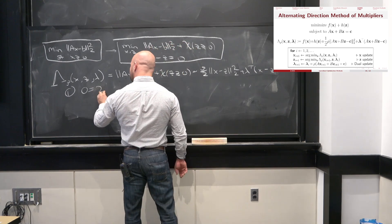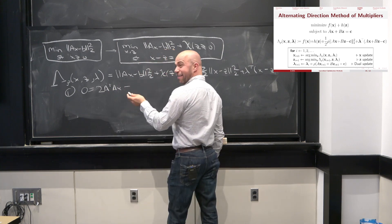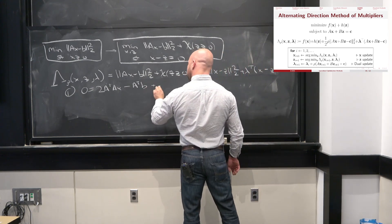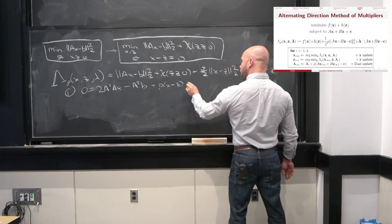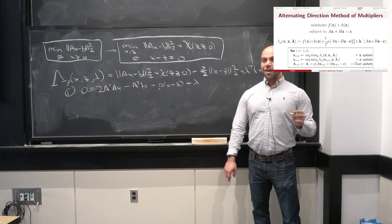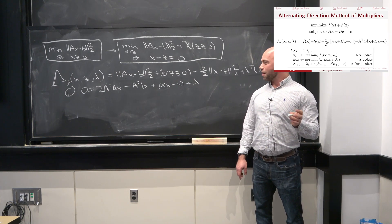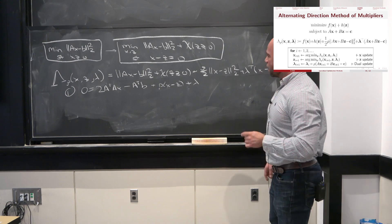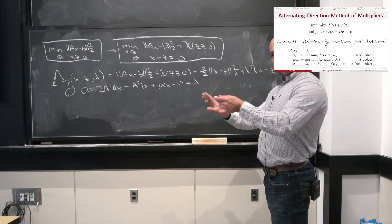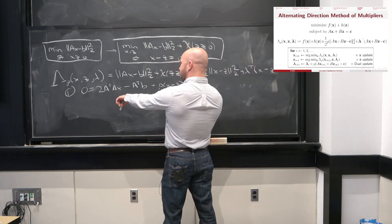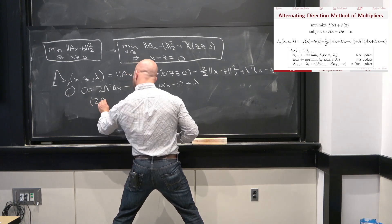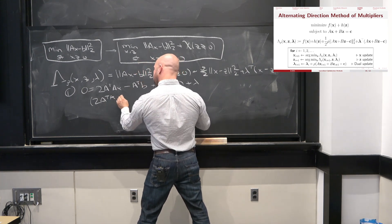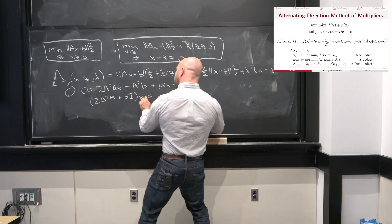There are also special cases of ADMM that lead to really interesting algorithms in the computer science sense — ways to optimize efficiently with multiple processors. About the choice of rho: this algorithm converges for any rho > 0, but convergence speed can be quite different. In practice, people will adjust rho — if the objective isn't changing much they'll decrease it; if it's changing too fast, they'll decrease it. Every time you change rho, you have to refactor the matrix, which discourages adjusting it every step.